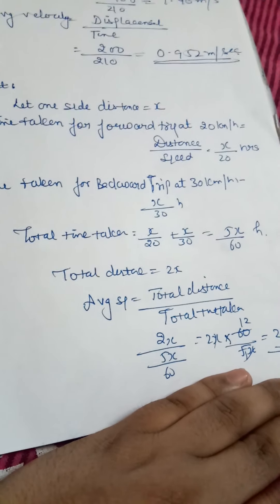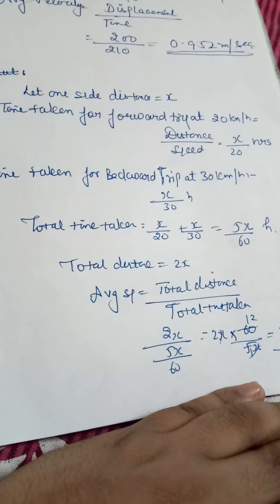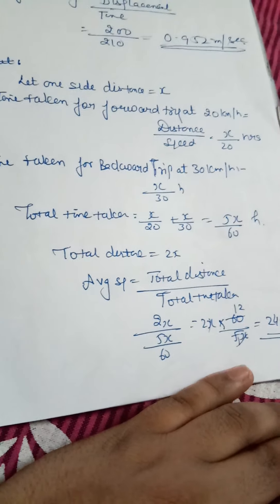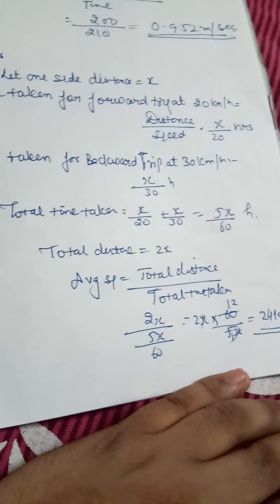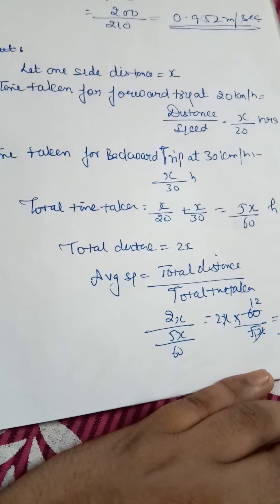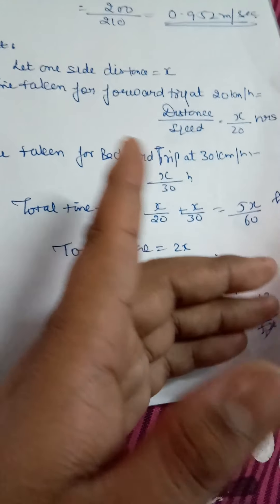Total time taken includes time at 20 km per hour speed and time at 30 km per hour speed, which is taken by the person while going to school and coming back from school to home.